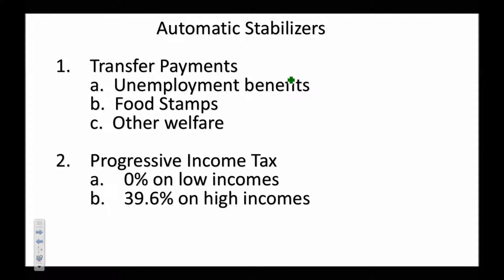Transfer payments — this is where the government gives money to people. So if somebody loses their job in a recession, they get unemployment benefits, which helps them spend money. They could also receive food stamps, which helps them purchase food — that's expansionary. There are other forms of welfare as well. The government does all kinds of things to help people in times of recession, and the point is that these things automatically occur.